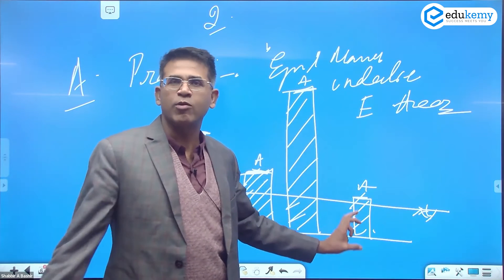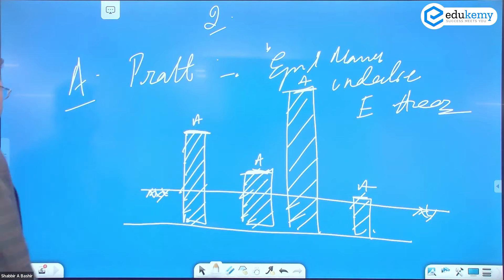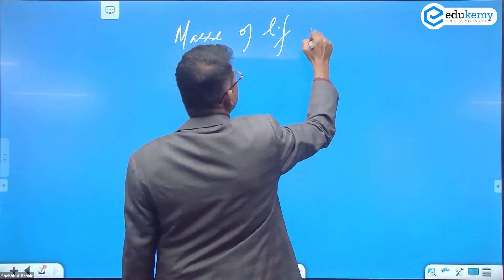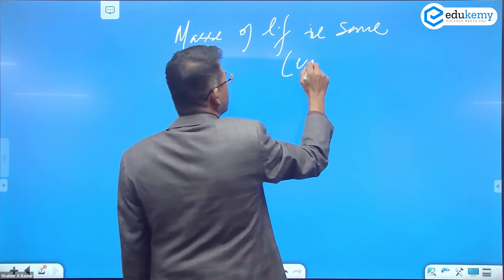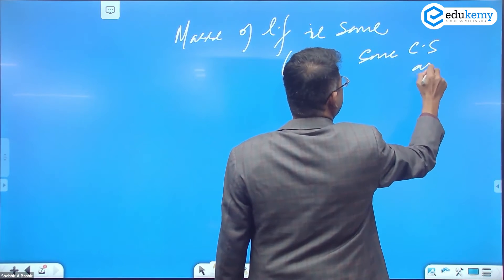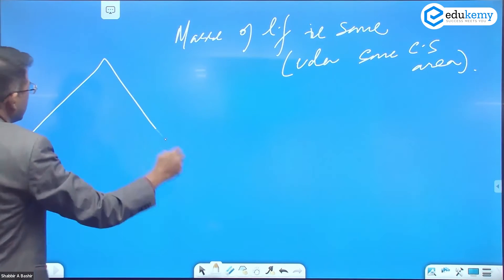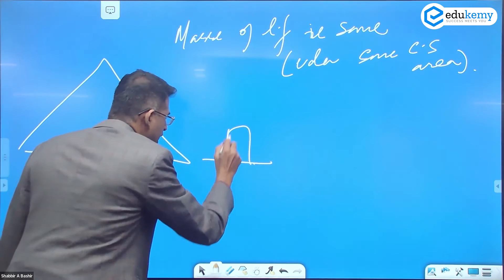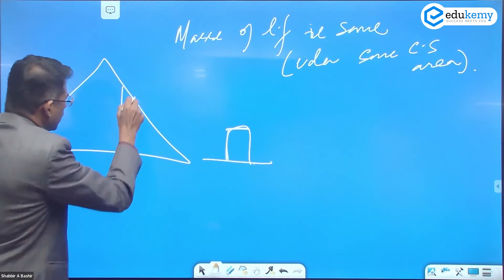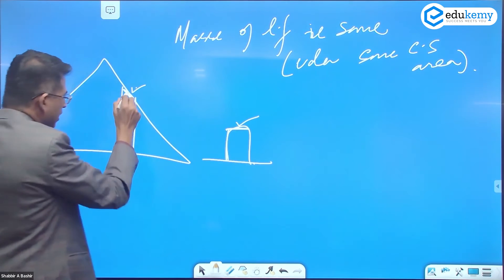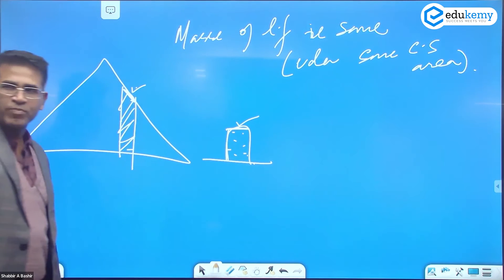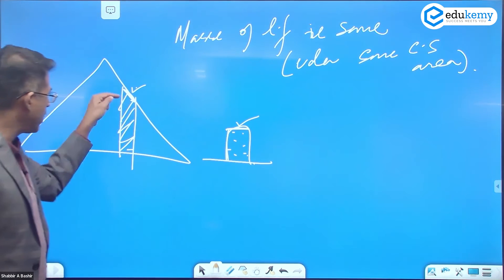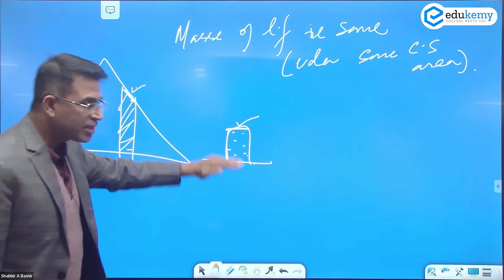The masses of landforms are the same under the same cross-section area. The important point is: it's not saying the entire tall mountain has the same mass as a small plateau. If you draw this cross-section here, this area is the same as that area, then this mass is the same as that mass — not the entire mountain. For the same cross-section, the masses underneath are equal.